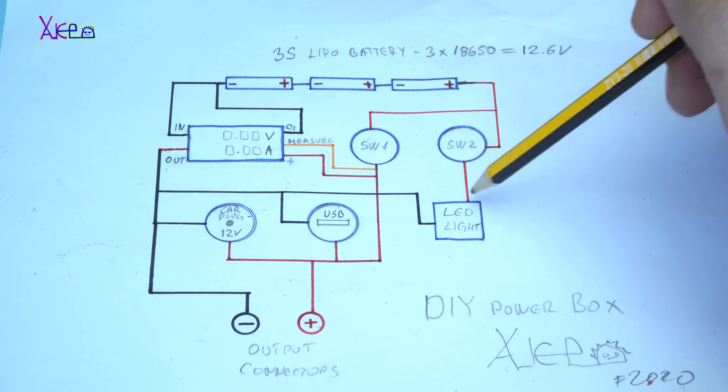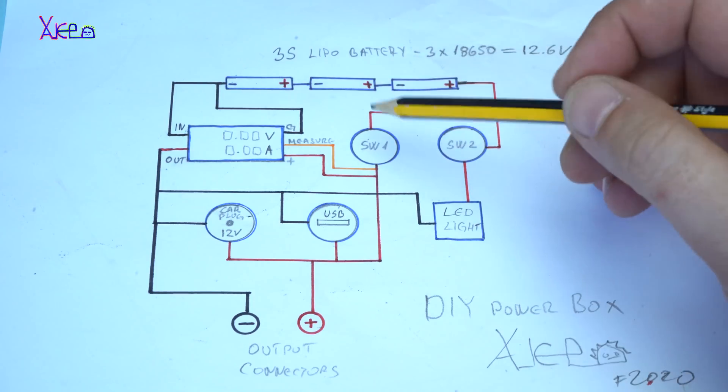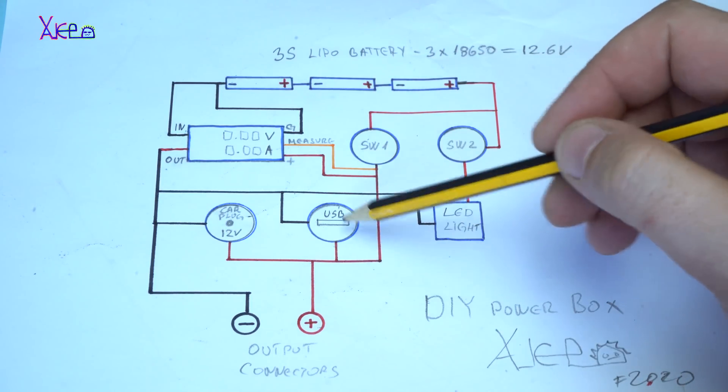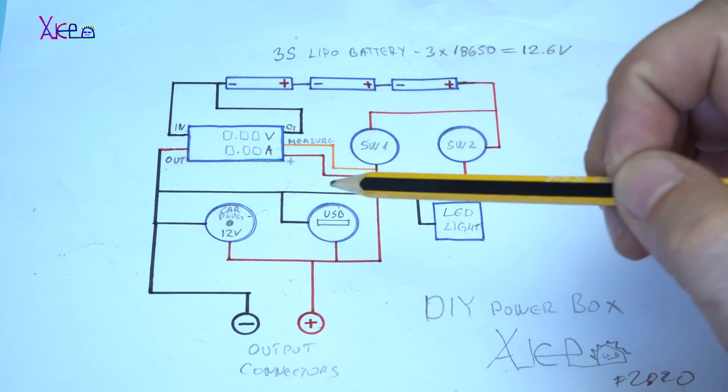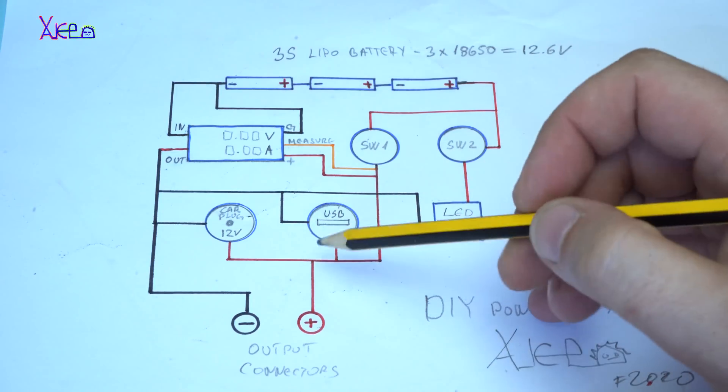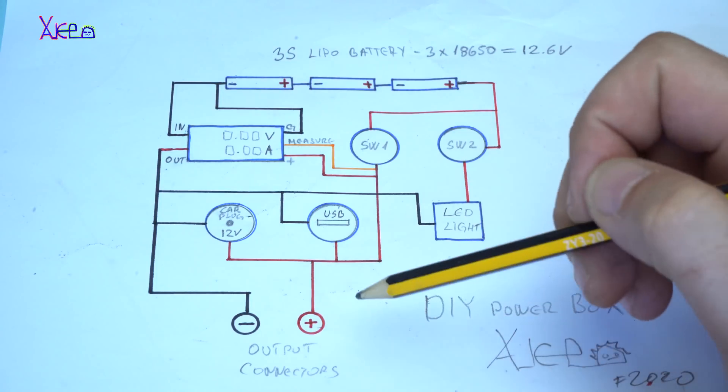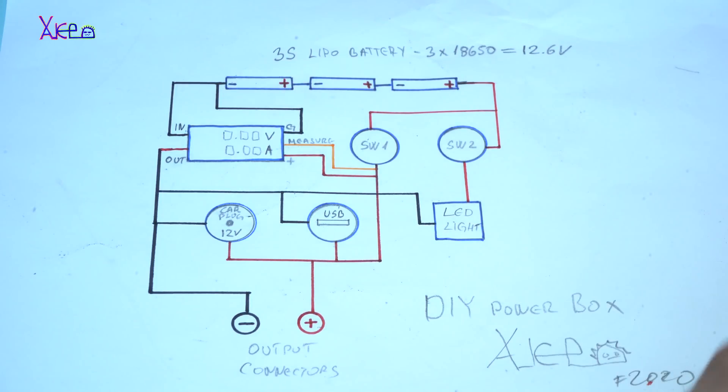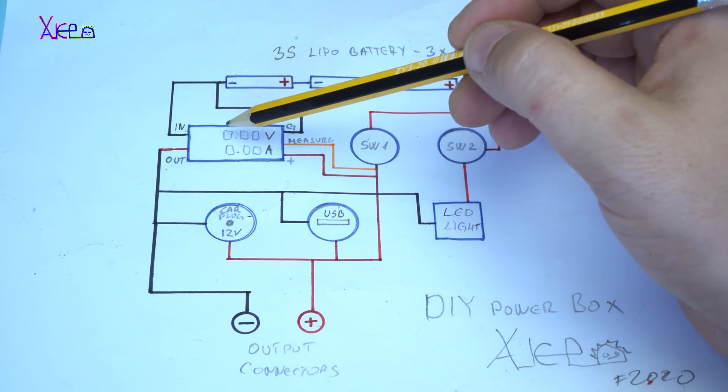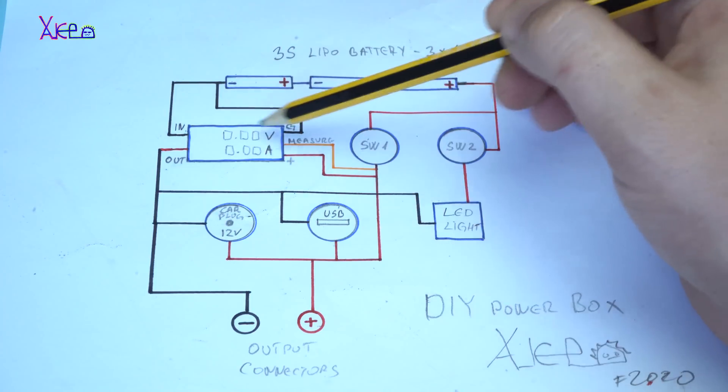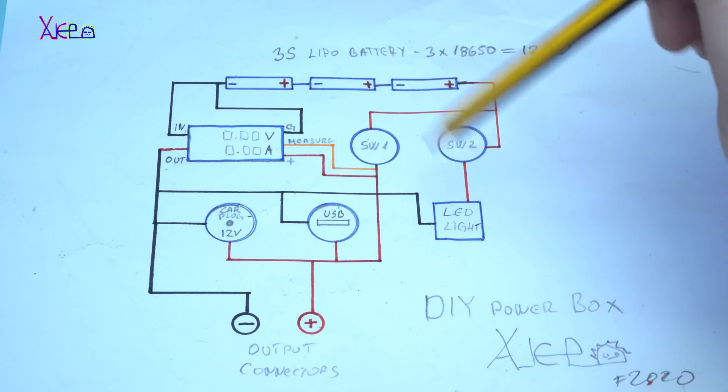From the main switch the positive will go to the USB outlet and to the 12 volt socket, and also will go to the output banana connector. The grounding first needs to go into the voltmeter and ammeter module, and from here will be connected to all components.